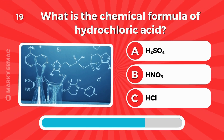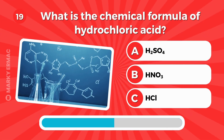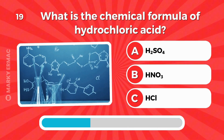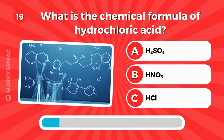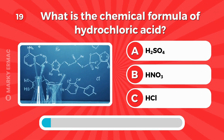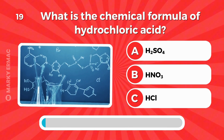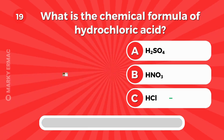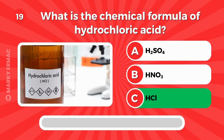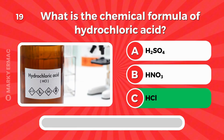What is the chemical formula of hydrochloric acid? The correct answer is C — HCl.